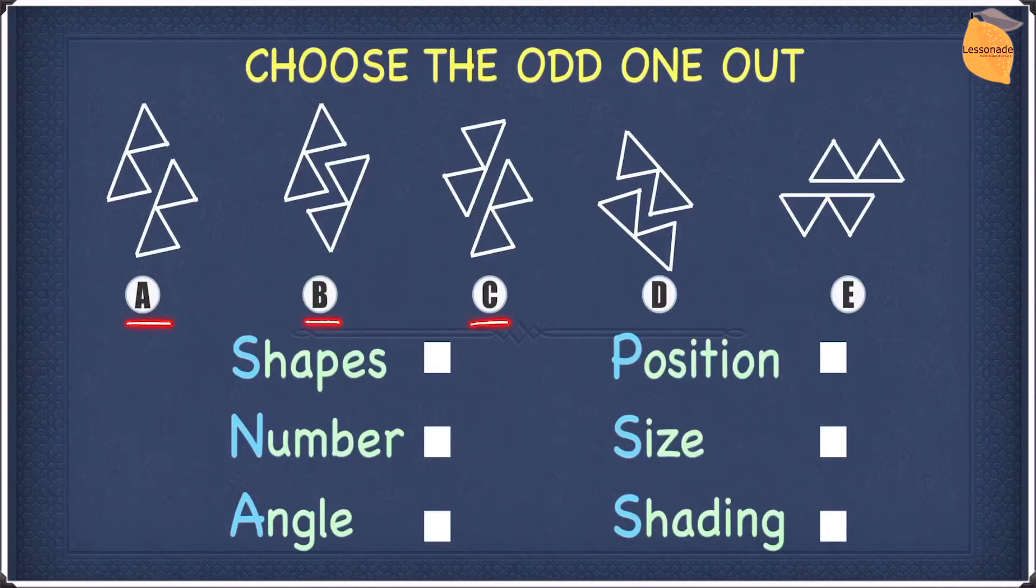A, B, C, D, and E. And four of the options are related to each other, but one of them is different. Our job is to find the different one, which will be the odd one out.